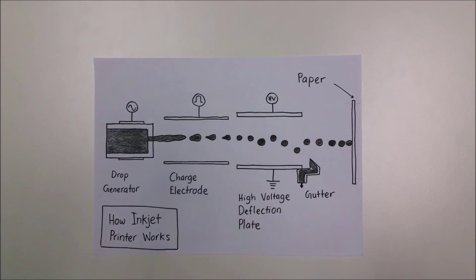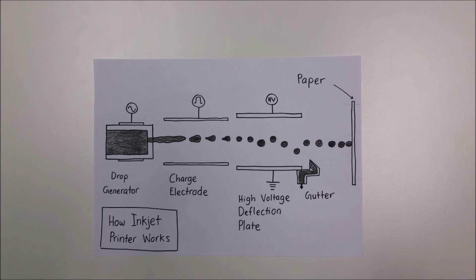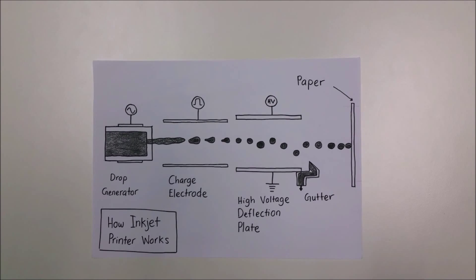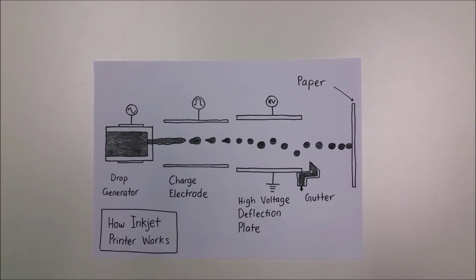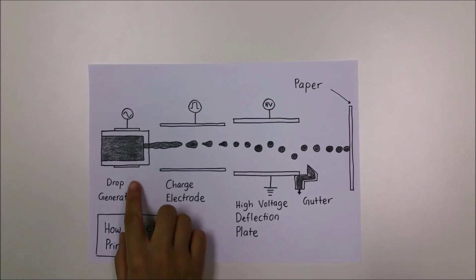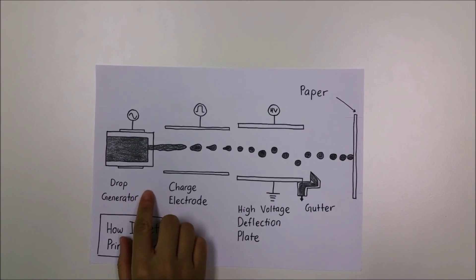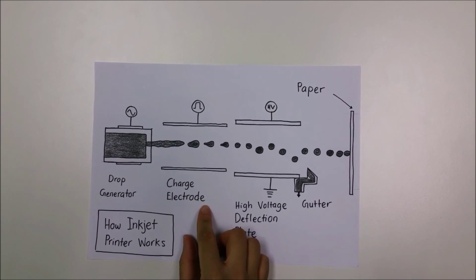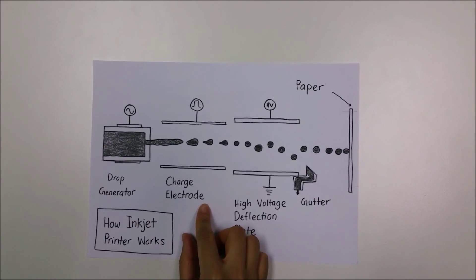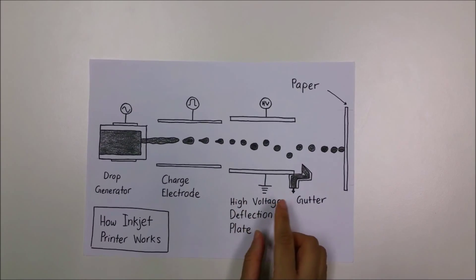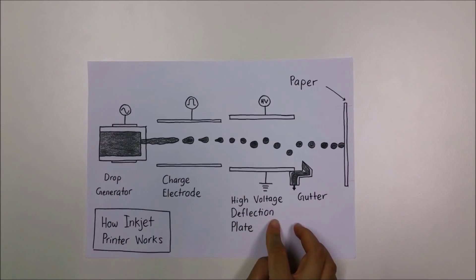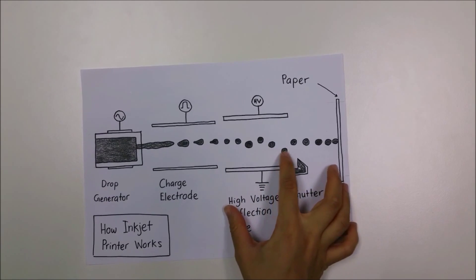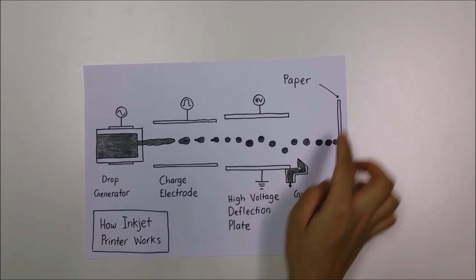The application of Plateau-Rayleigh Instability can be found in inkjet printers. The ink drop generated is broken down into final droplets by the charged electrode. A high voltage deflection plate maintains the droplet size as the ink travels onto the paper.